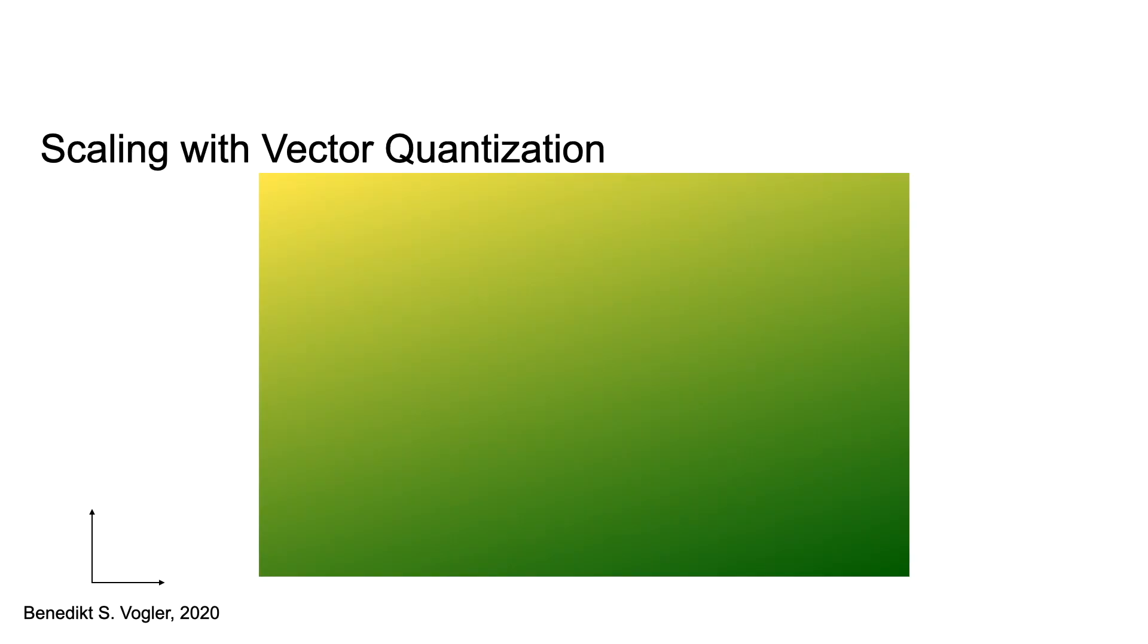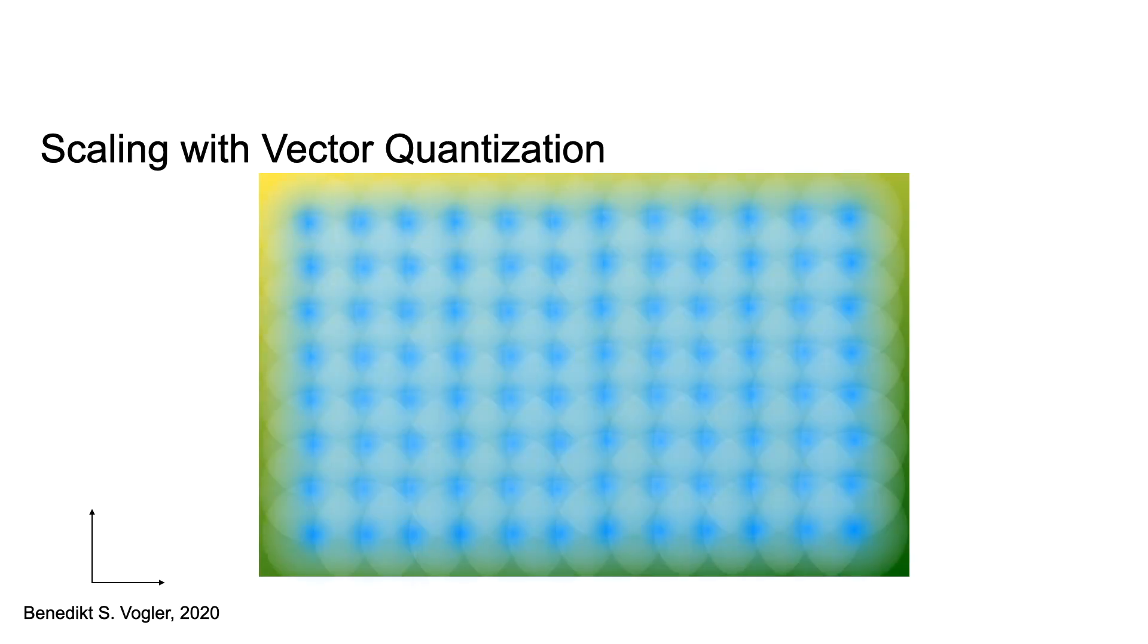The place-field approach suffers from the curse of dimensionality. With each dimension, the number of required fields grows exponentially. One approach I tried is to use vector quantization.